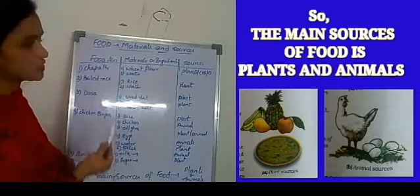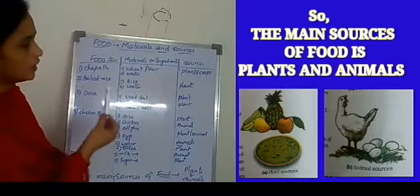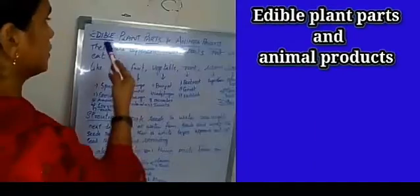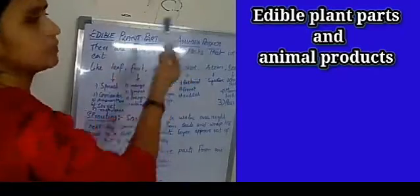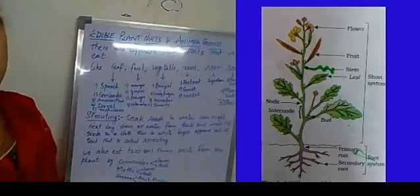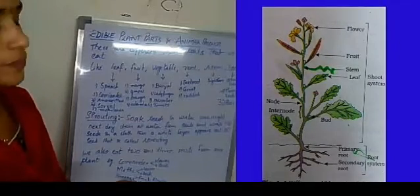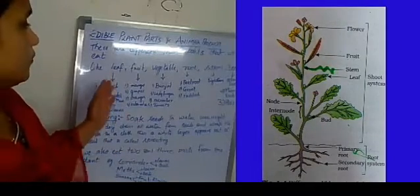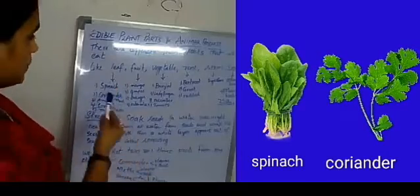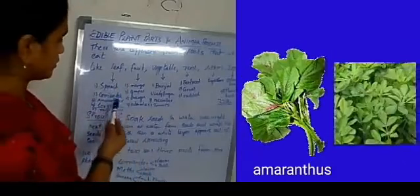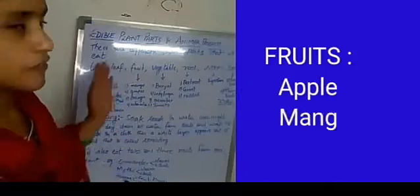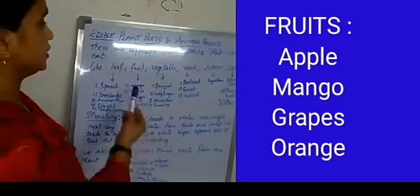Next we shall see the edible parts of plants and products of animals. There are different plant parts that we eat in our day-to-day life. For example, if you take the leaf part, we have so many leafy vegetables like spinach, coriander, amaranthus leaves, sorrel leaves, and methi leaves.